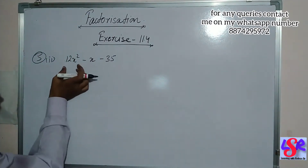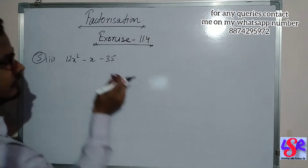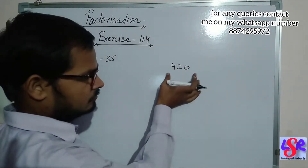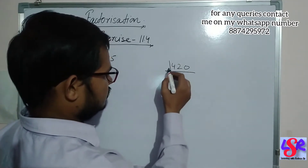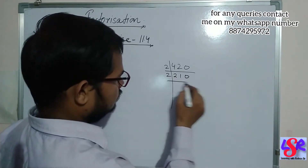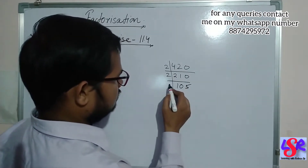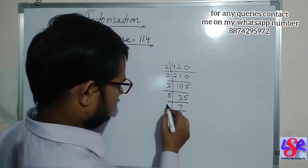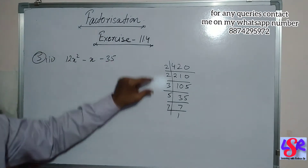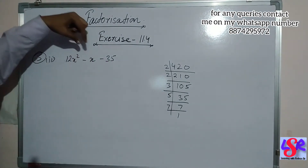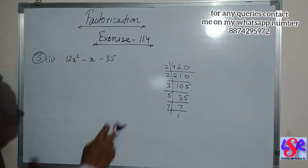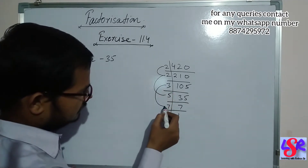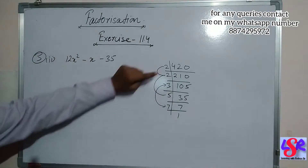Now let's go with question number five, second part. Here we are having 12x square minus x minus 35, and the product of 12 and 35 is 420. As 420 is quite a big number, we will do the prime factorization: 420 = 2 × 210 = 2 × 2 × 105 = 2 × 2 × 3 × 5 × 7. Now we make two sets using these prime factors to get a difference of 1. Taking 2×2=4 and 4×5=20, and 3×7=21, we get 21 minus 20 equals 1.